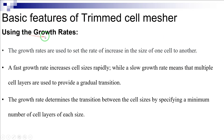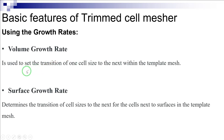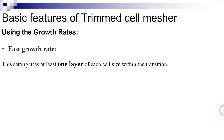The growth rates in the Trim Cell Mesher are used to set the rate of increase in the size of one cell to another. A fast growth rate increases cell sizes rapidly, while a slow growth rate means that multiple cell layers are used to provide a gradual transition. The growth rate determines the transition between cell sizes by specifying a minimum number of cell layers of each size. In Star CCM+, there are both the volume growth rate and the surface growth rate.